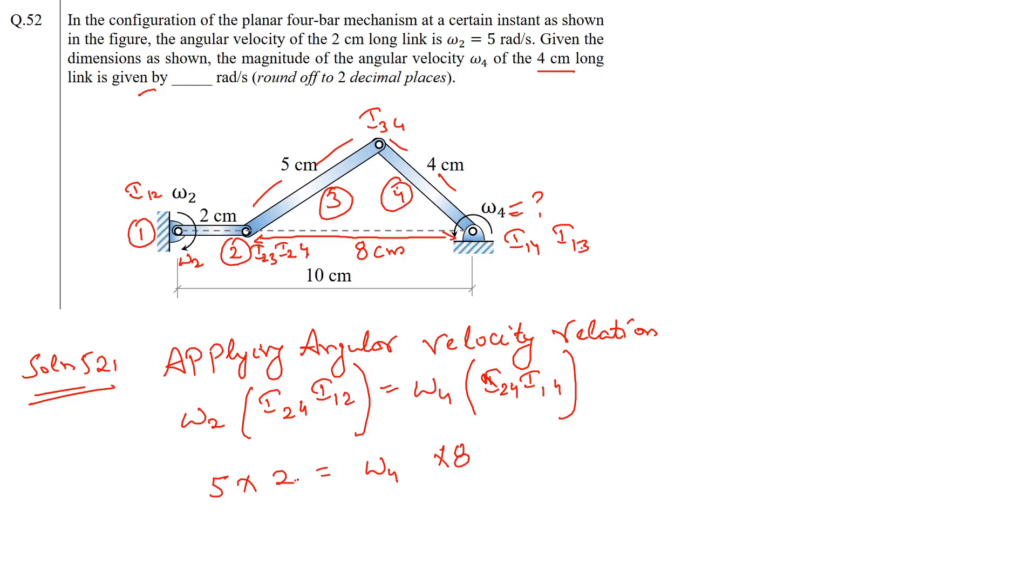If I write for ω4 it would become 5 times 10 divided by ω4 times 8, so ω4 is equal to 10 by 8 which equals 1.25 radians per second. So this is the correct answer for this question.